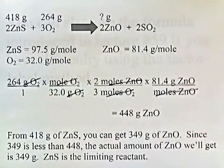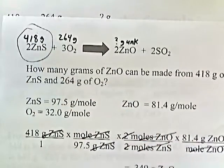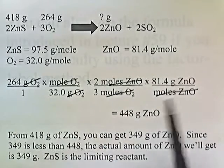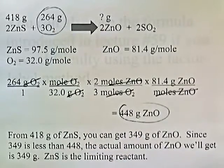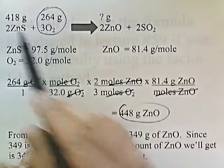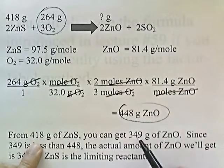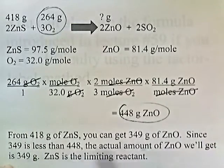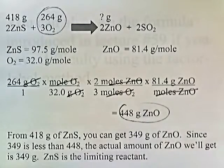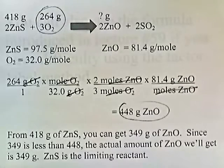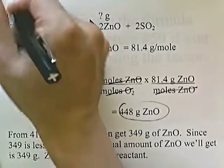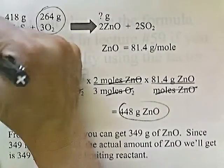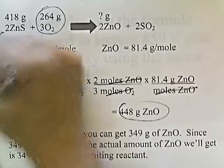Previously we figured out how much ZnO we can get from 418 grams of zinc sulfide: it's 349 grams. And from 264 grams of oxygen we can get 448 grams of zinc oxide. Since 349 is less than 448, the actual amount of zinc oxide we can get is 349 grams. So zinc sulfide is the limiting reactant — it sets a limit on the actual amount of zinc oxide you can get, which is 349 grams.